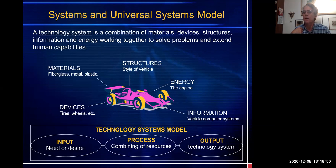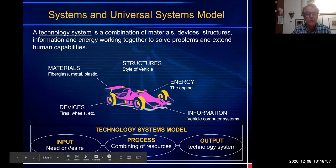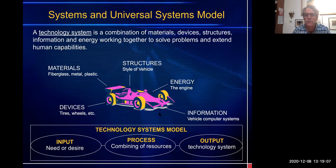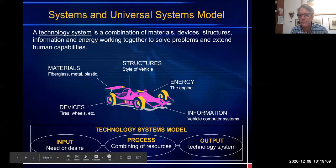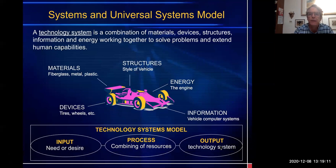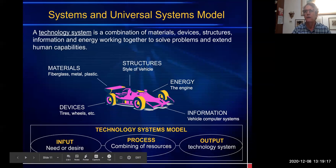So: input, need or desire — want to go fast. Process — we combine resources: we need materials, structures, energy, information, devices. And I output a technology system: I build a Formula One car so I can fulfill my desire to go fast.